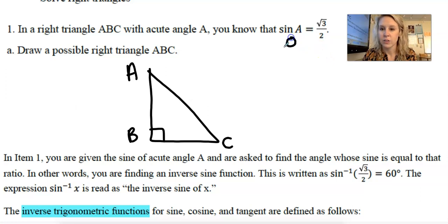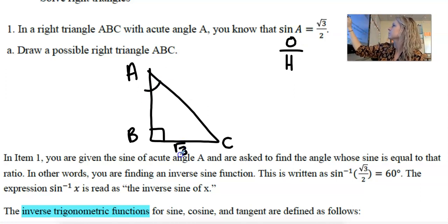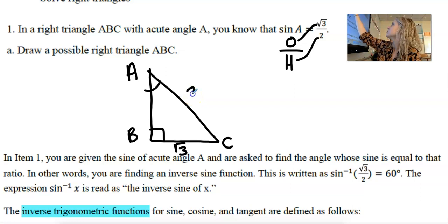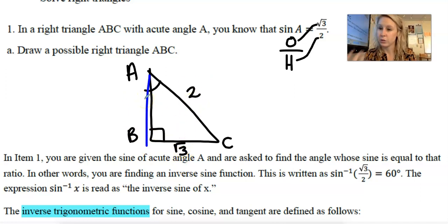We know from our previous lessons that sine is opposite over hypotenuse. So the square root of 3 goes on the opposite side of A — here's angle A, opposite of that is BC — so the square root of 3 is at the base of our triangle. The denominator is 2, which matches our hypotenuse, so this side is 2. The only thing we really know how to find now is the length of AB, because if I know two sides of a right triangle I can find the third using the Pythagorean theorem.